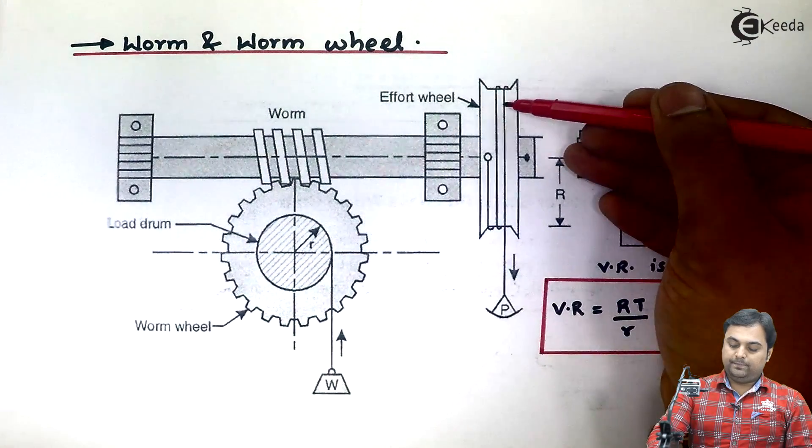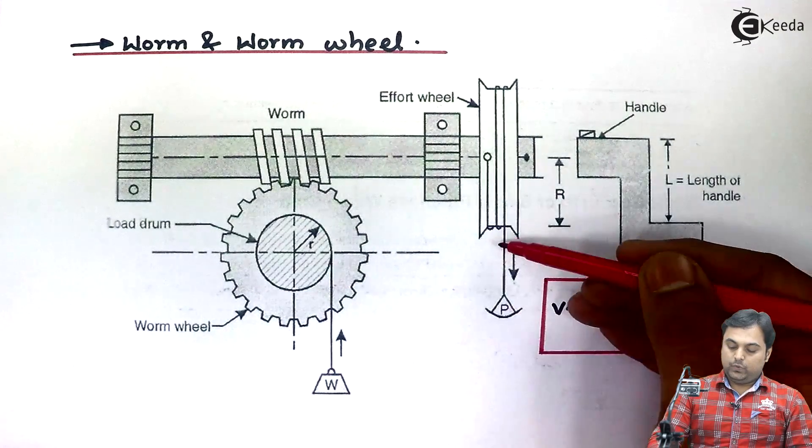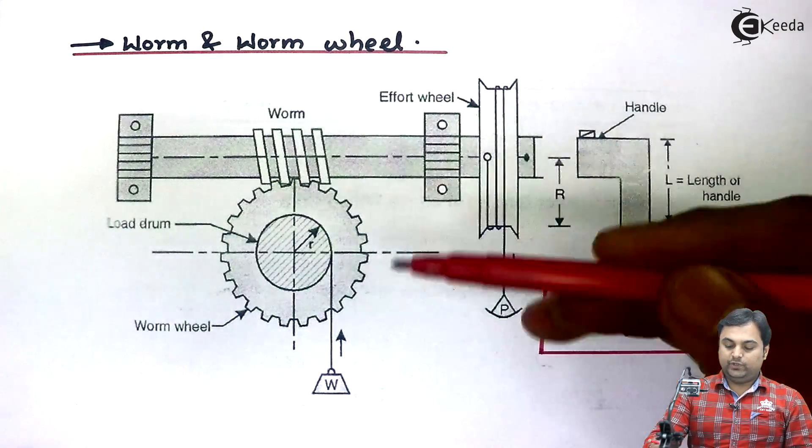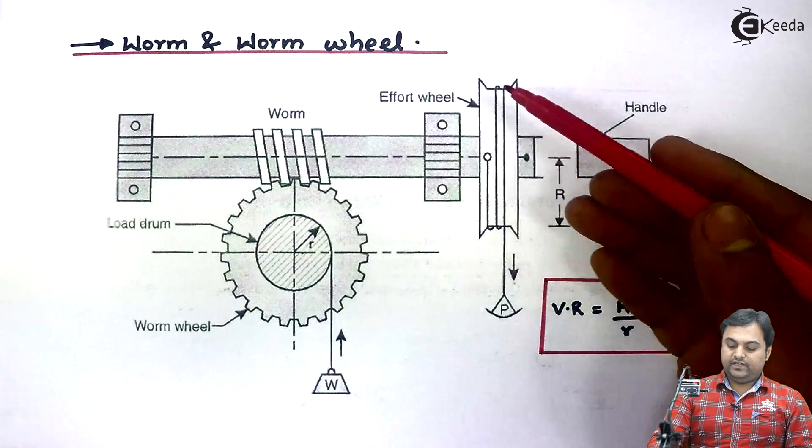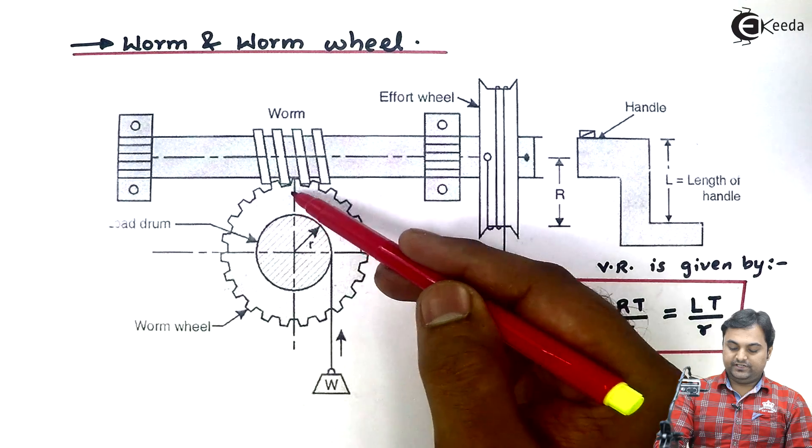Now how it functions. Effort would be applied in the downward direction. Either we can pull this string down. When the effort is applied, effort wheel starts rotating. When effort wheel rotates it will be rotating the worm.